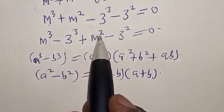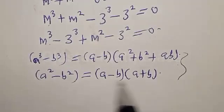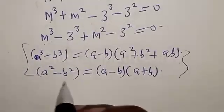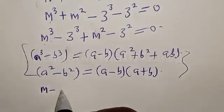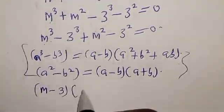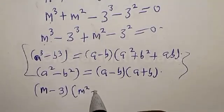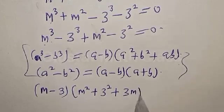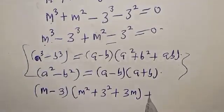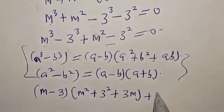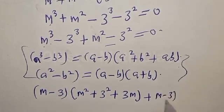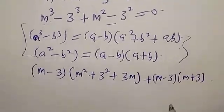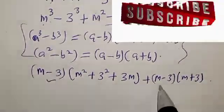Therefore, substituting for m³ minus 3³ plus m² minus 3²: in this case a is m and b is 3. Then we have (m minus 3)(m² plus 3² plus 3m), then remaining plus (m minus 3)(m plus 3).